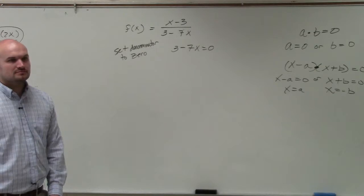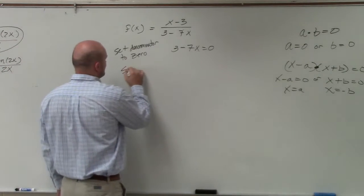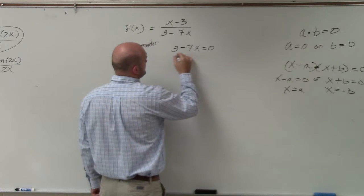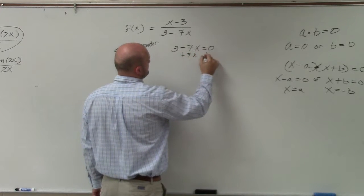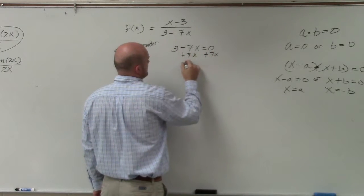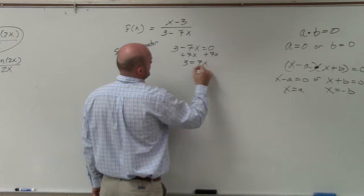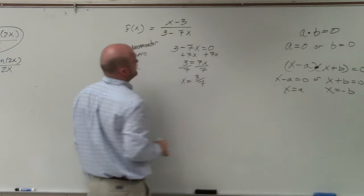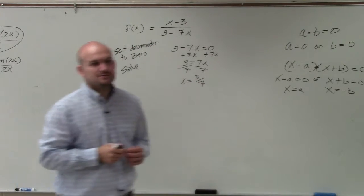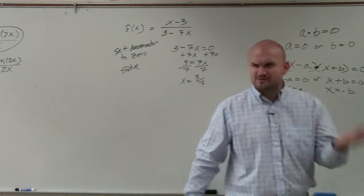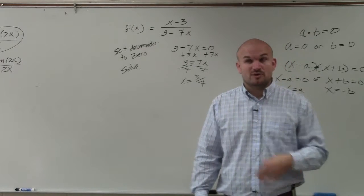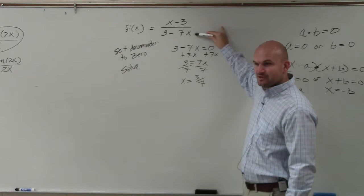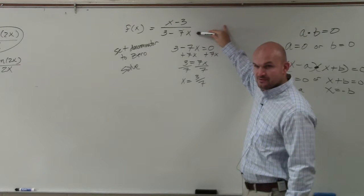Then you solve. So x equals 3 over 7. So what do we know about 3 over 7 again? When x equals 3 over 7, what happens to my denominator? What is the value of my denominator now? 0.